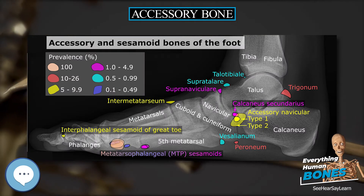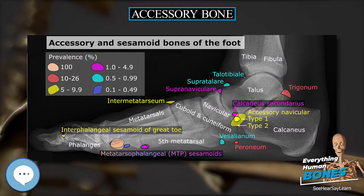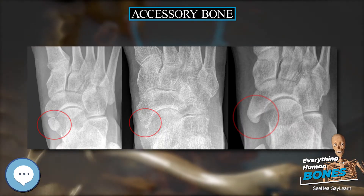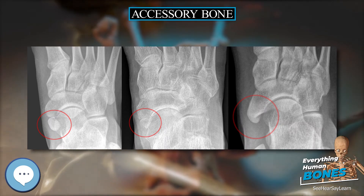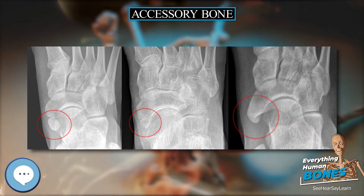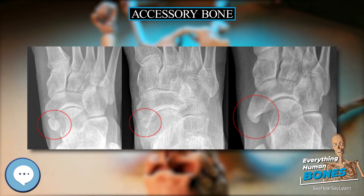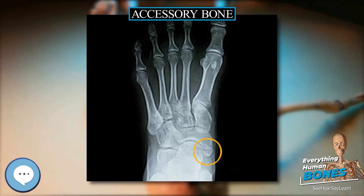Accessory bones at the ankle mainly include the os trigonum, further described below, which may also be seen on an ankle x-ray.